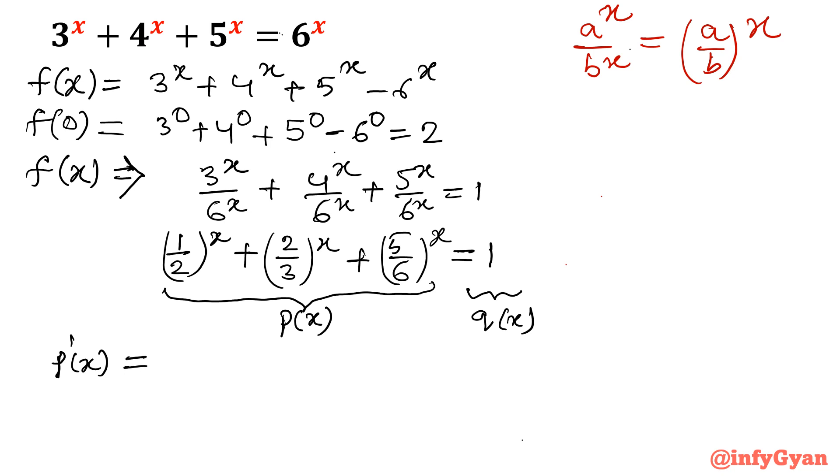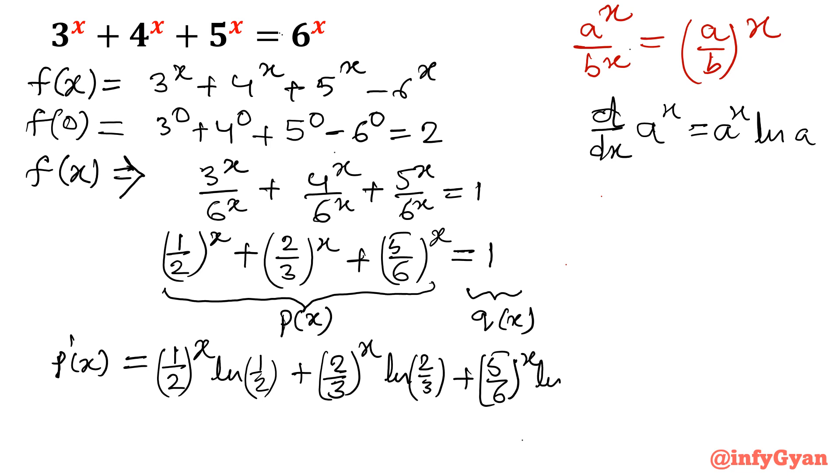p(x) = (1/2)^x + (2/3)^x + (5/6)^x. Let me find p'(x) using the first derivative test. The derivative of a^x equals a^x ln(a). So p'(x) = (1/2)^x ln(1/2) + (2/3)^x ln(2/3) + (5/6)^x ln(5/6).